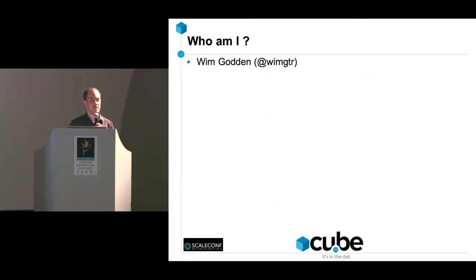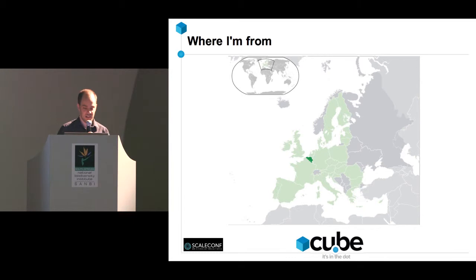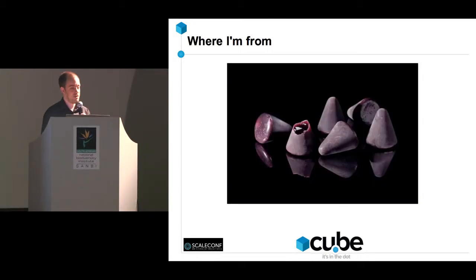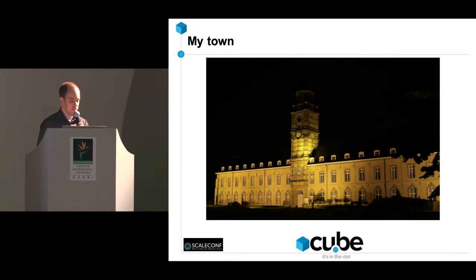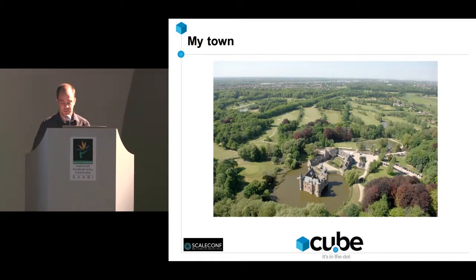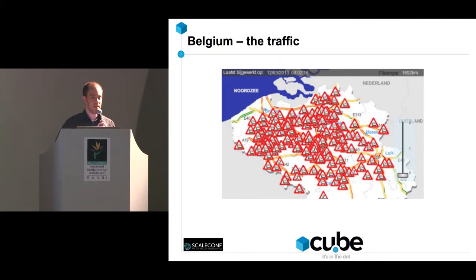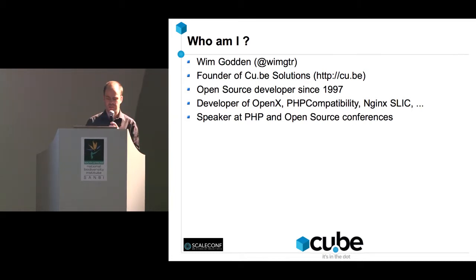Quick introduction: my name is Wim Godin — that's my Twitter handle if you want to follow me. I'm from Belgium, which is in Europe, that little dark green country best known for beer and chocolate and other tasty things, odd-looking buildings as well. I'm from a little town in Flanders where we have a beautiful abbey and castles.